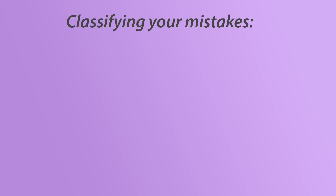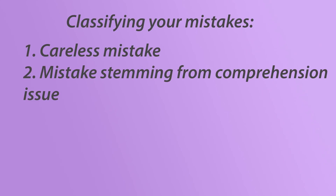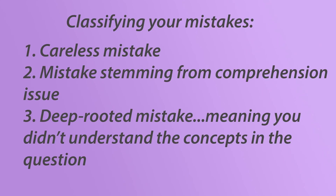In studying for these sections, whether you're on Khan Academy or taking practice tests, it's essential to write down each mistake you're making and how you'll avoid making it in the future. To do this properly, you first need to categorize your mistakes. There are two or maybe three main types of mistakes when it comes to SAT math: careless mistakes, ones that are slightly more rooted in not understanding the problem, and deep-rooted issues.